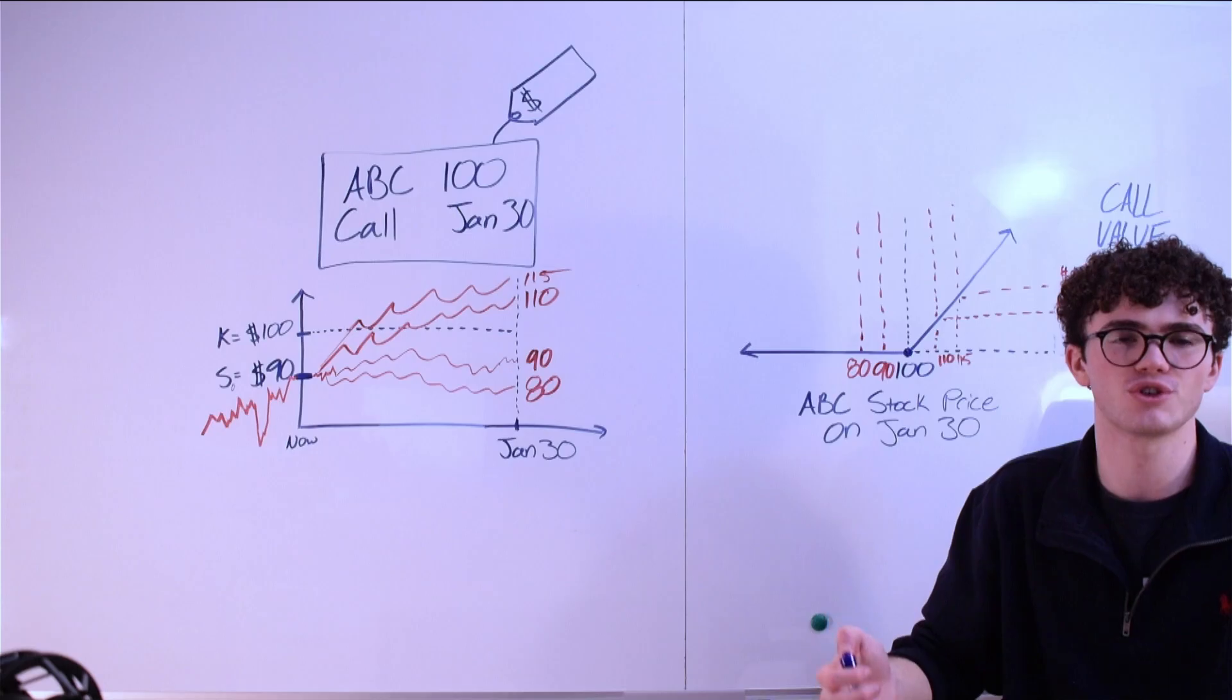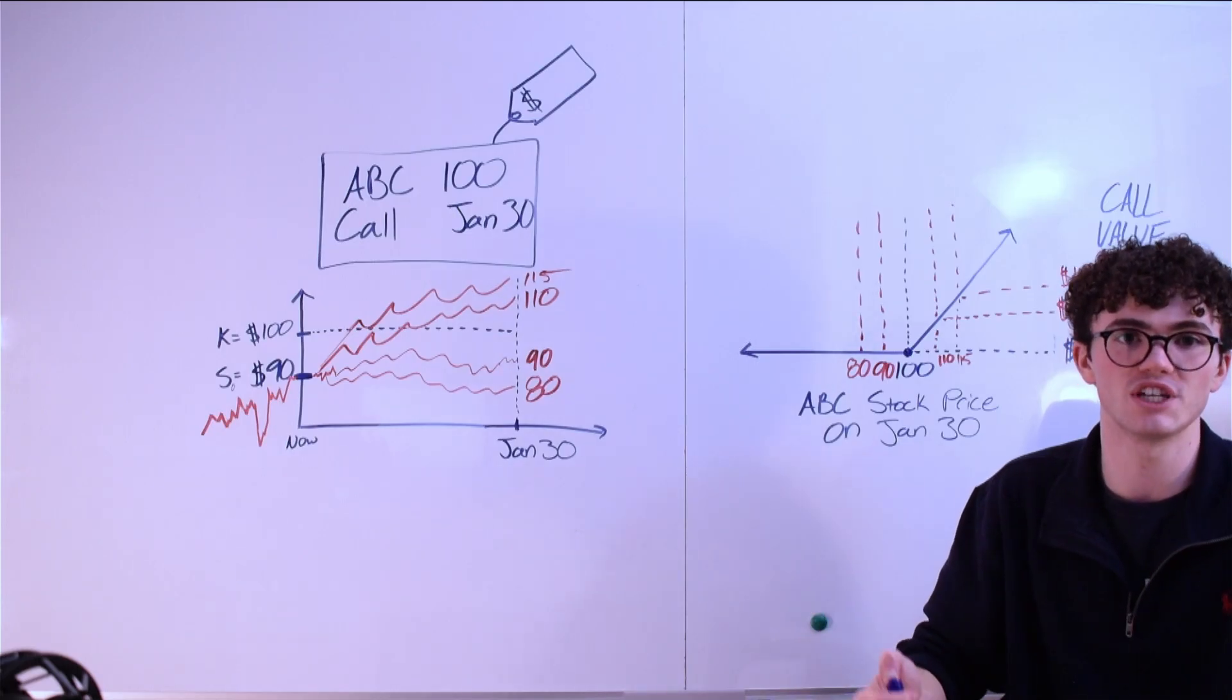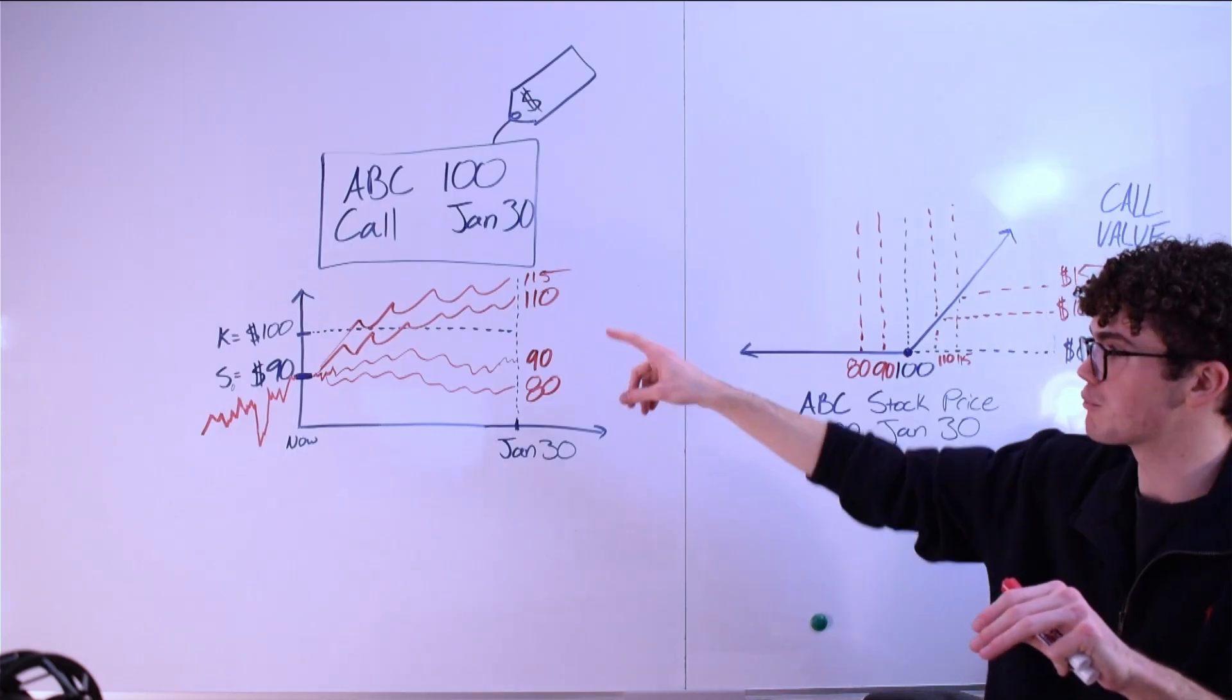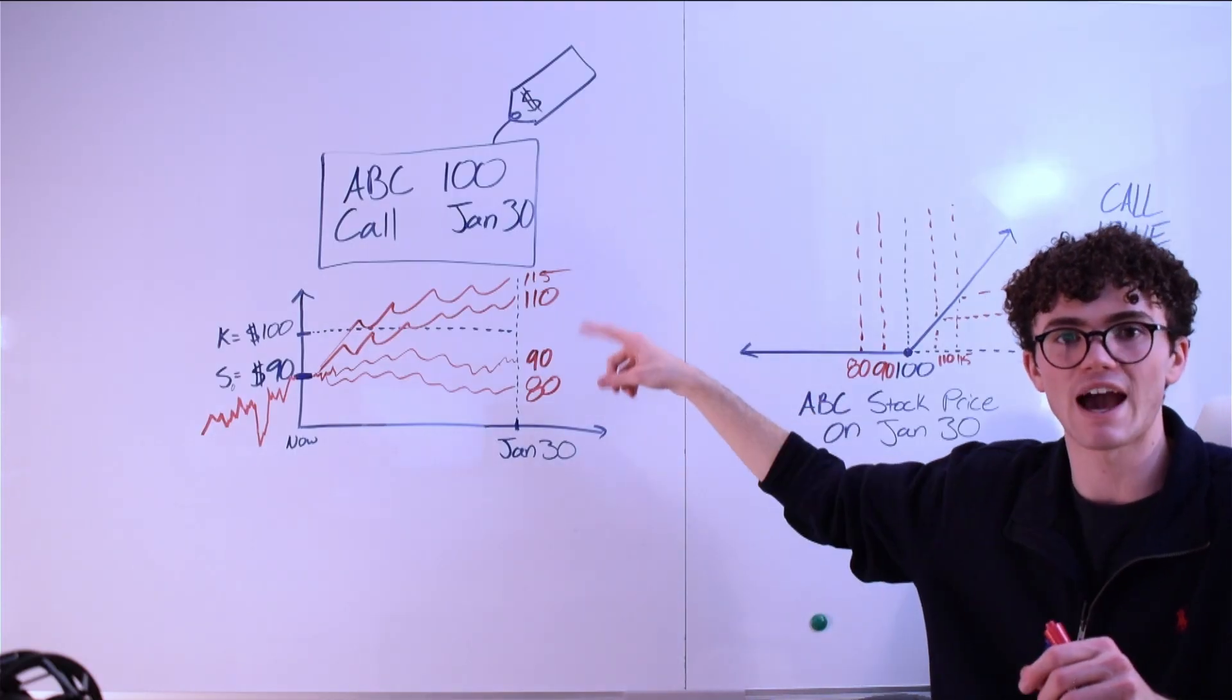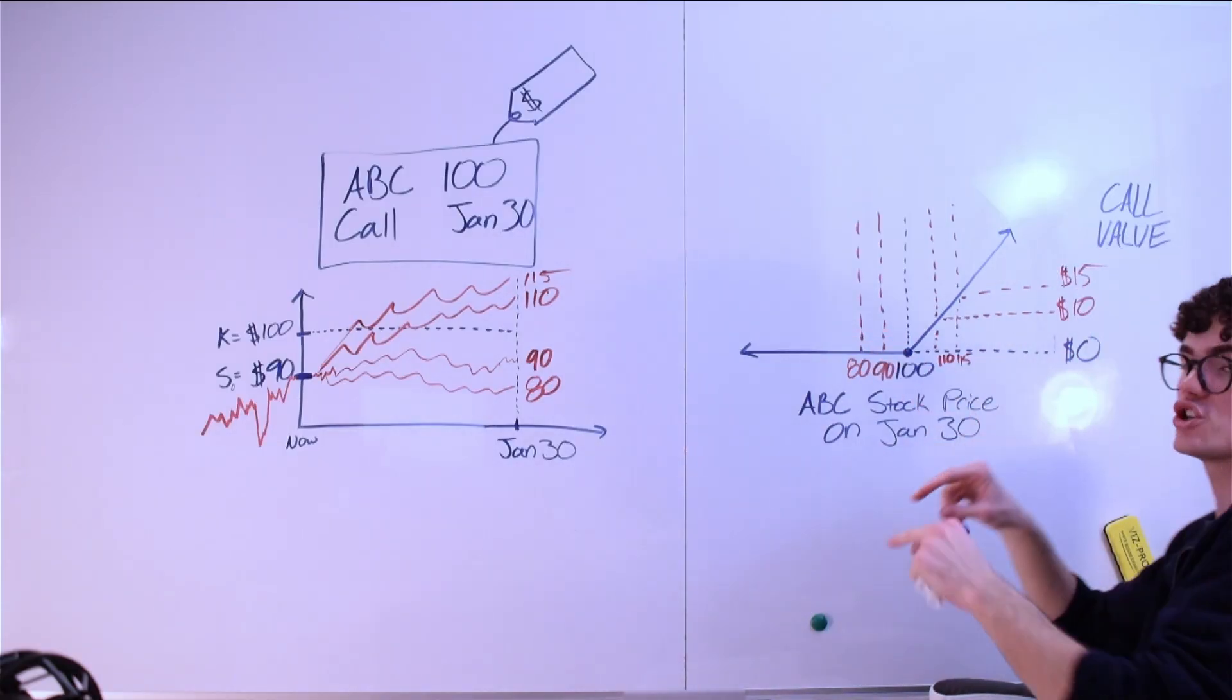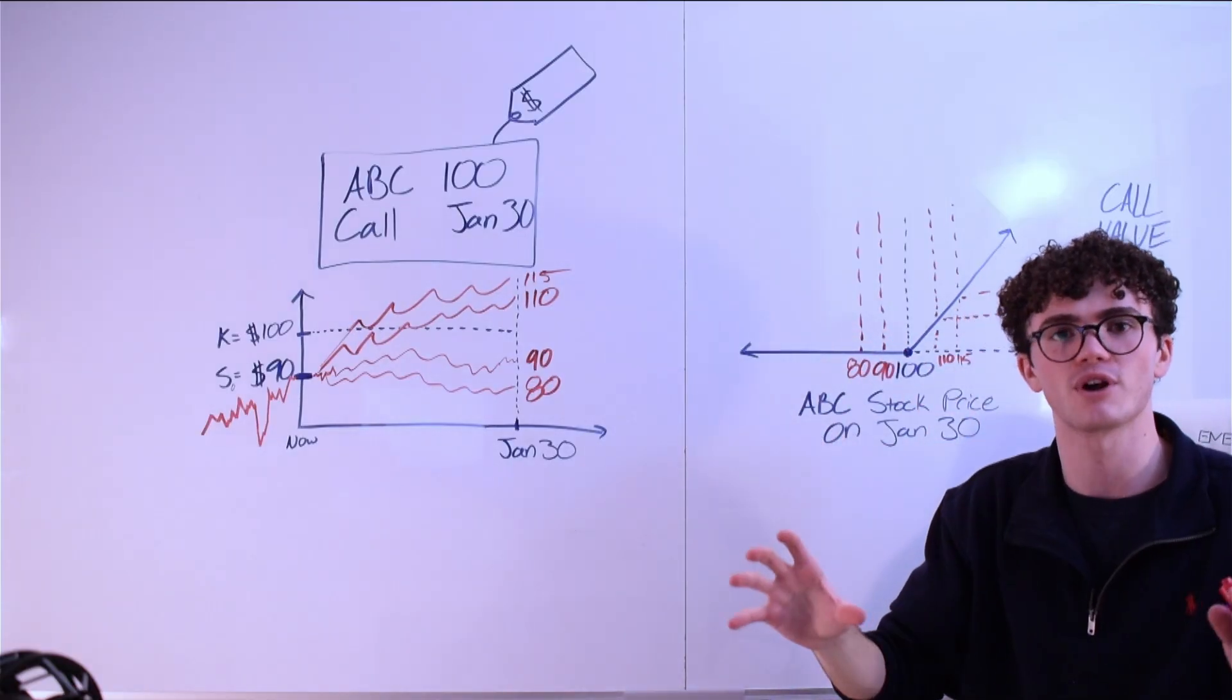That's a guiding question in options trading because we want to buy options that are too cheap and sell options that are too expensive. We're going to find the fair price of this option by assigning probabilities to every single one of these outcomes, these final prices for ABC stock, and then weighting this function by those probabilities. Let me explain what I mean and draw something.